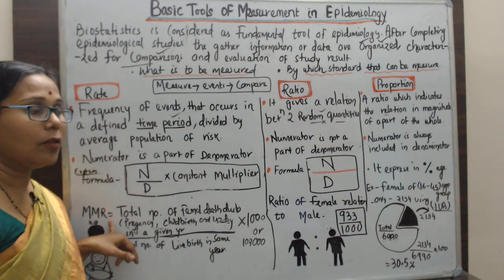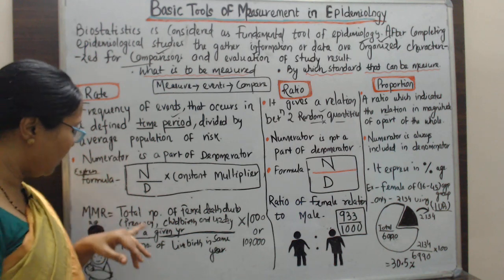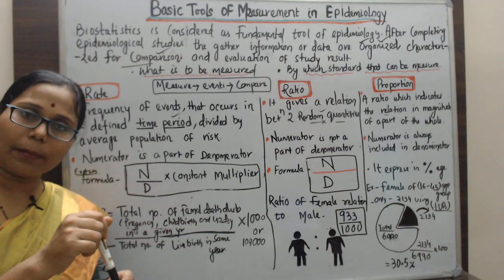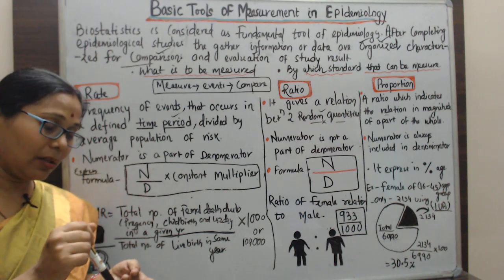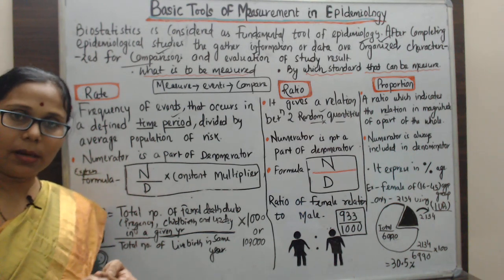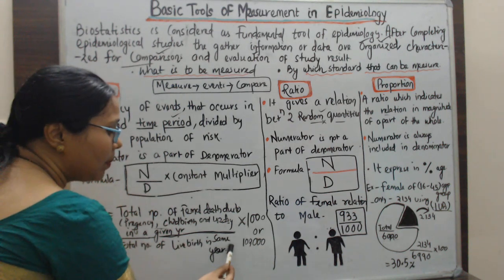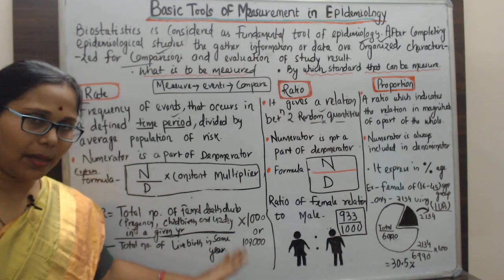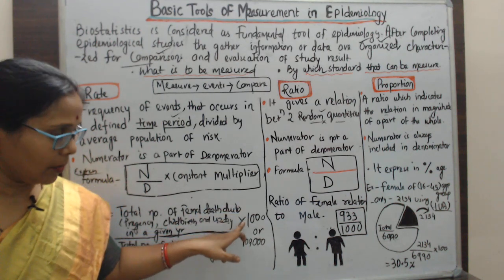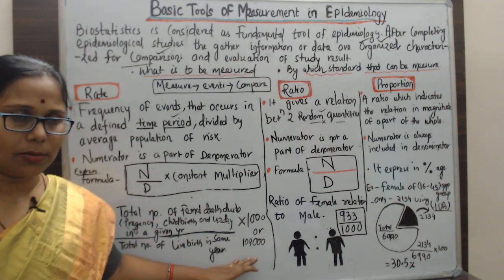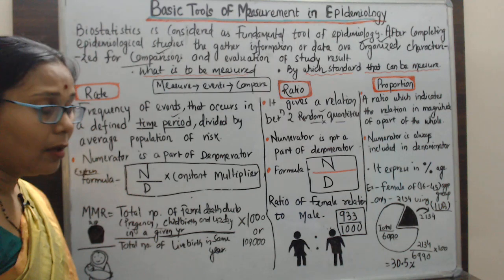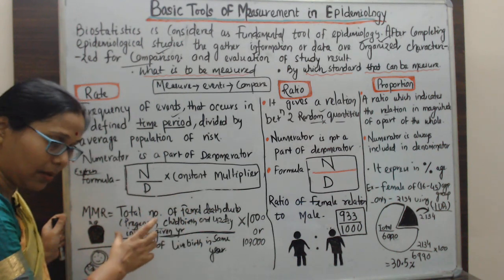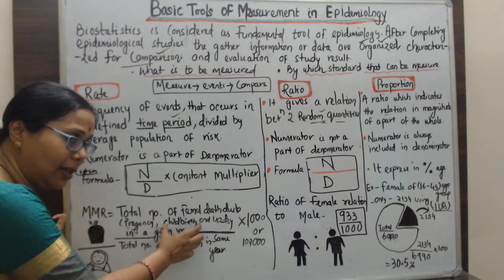Maternal mortality means the death of a mother during pregnancy (antenatal period), during delivery, or within 42 days after delivery. If the death of the mother occurs under these three circumstances, divided by the total number of mothers who gave a live birth in the same year, multiplied by 1,000 or 10,000 — that is called the MMR, the maternal mortality rate.